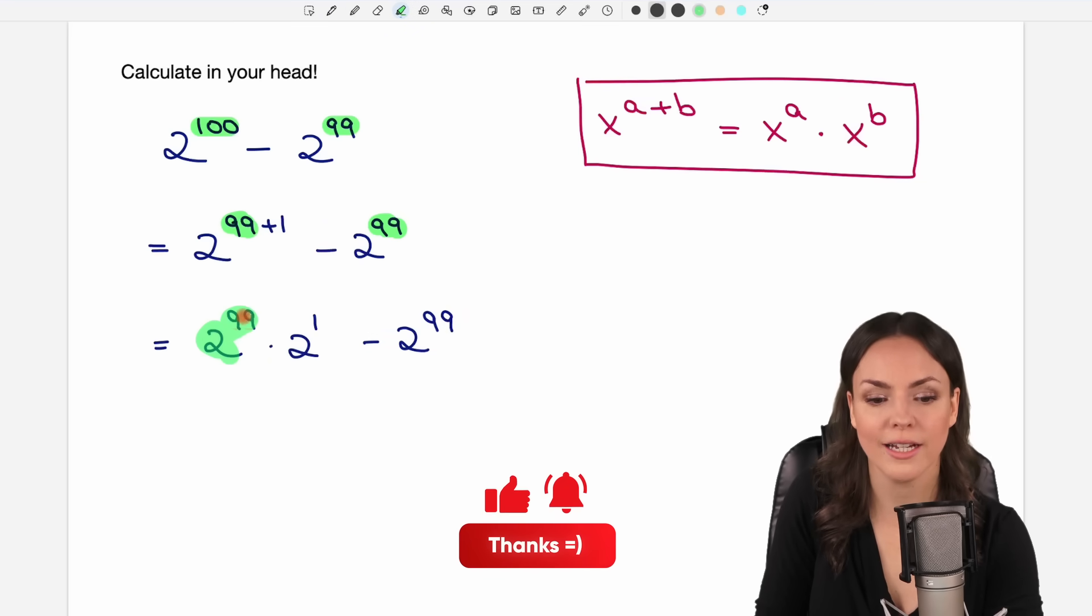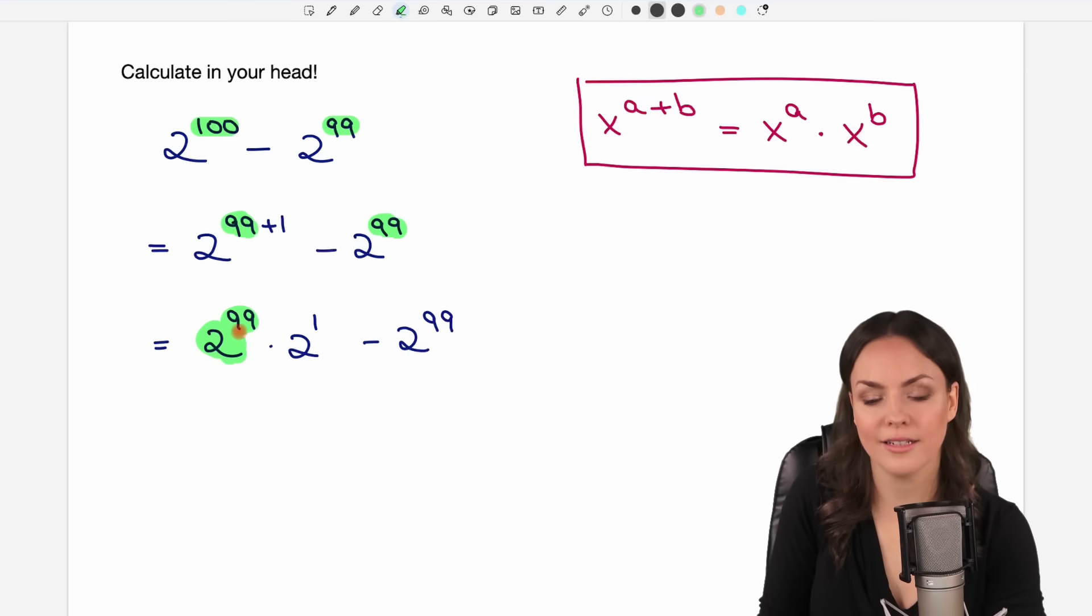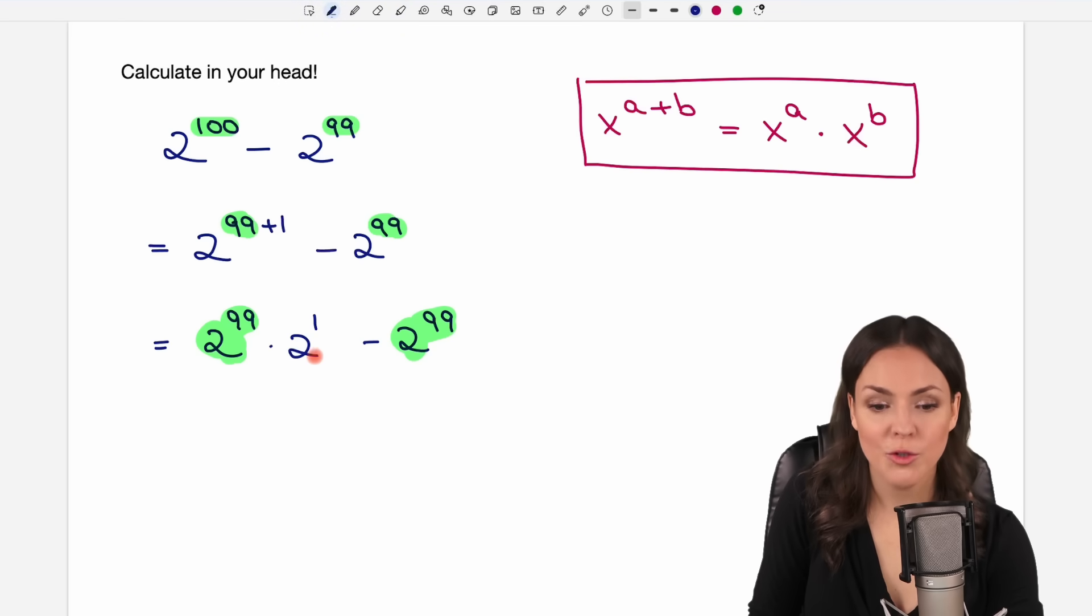We leave the second power as it is, and now we see that 2 to the power of 99 is in here in the first part as it is in the second part. The 2 to the power of 1, we don't have to write this 1 here, so we can just leave it like this.